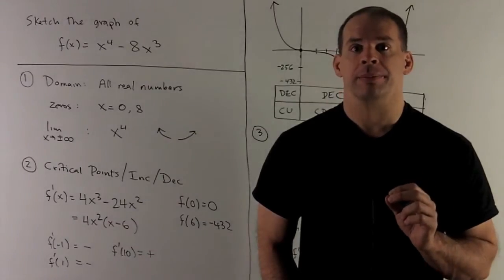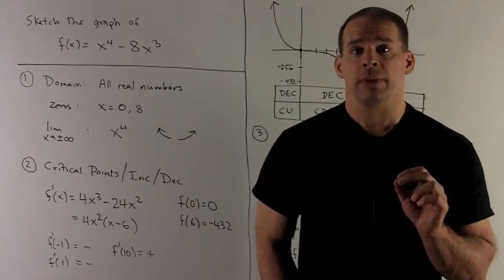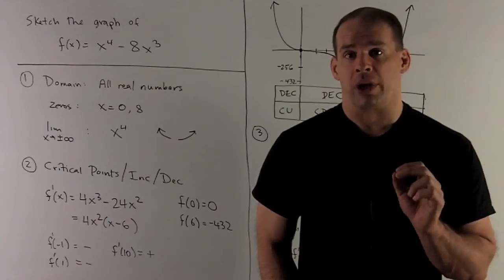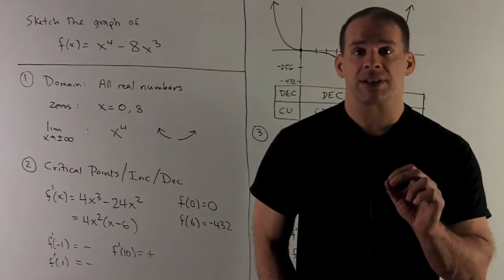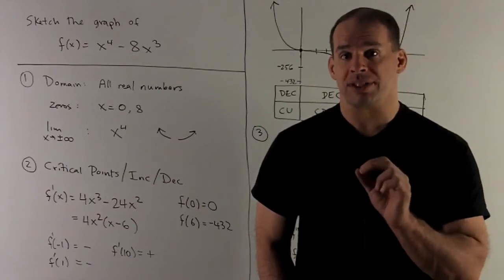First, the domain. Since I'm a polynomial, my domain is going to be all real numbers. If I stick a point in for x, something sensible always comes out.